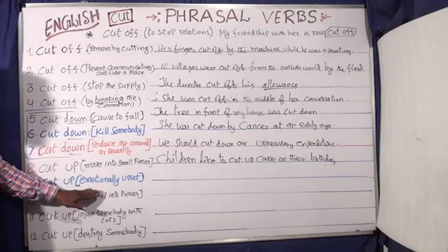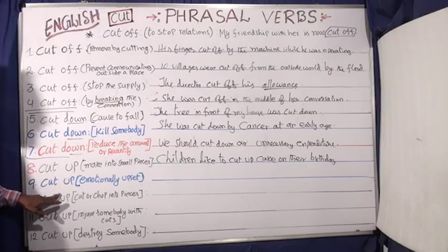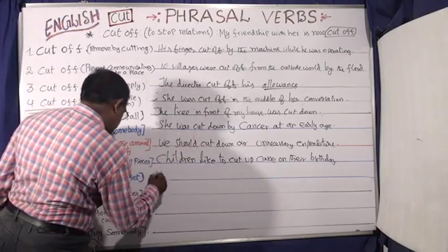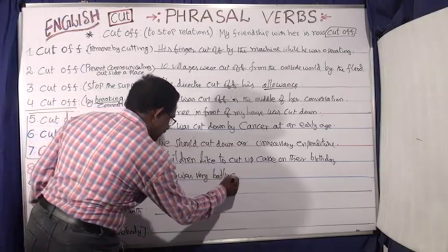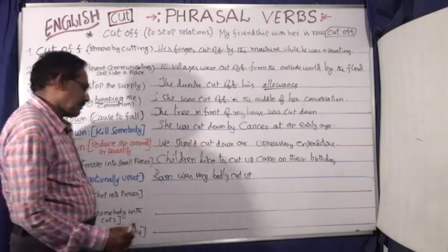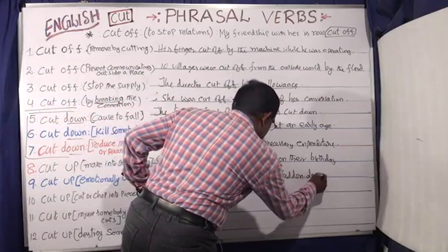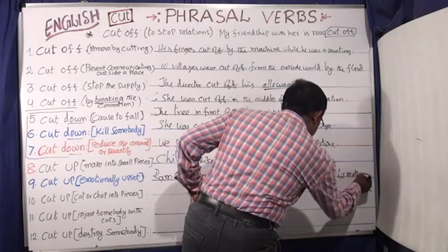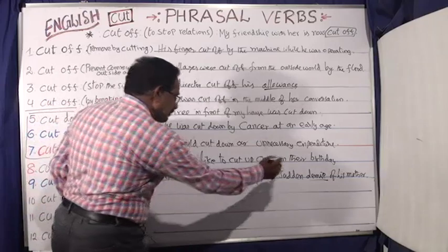Another meaning of 'cut up' is emotionally upset. For example: Ram was very badly cut up by the sudden demise of his mother. Here 'cut up' means he was deeply emotionally upset.